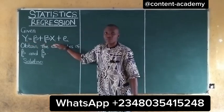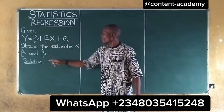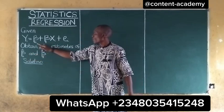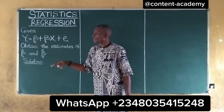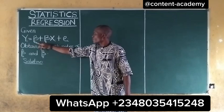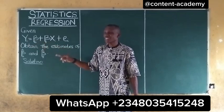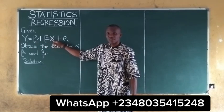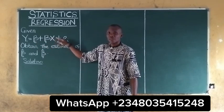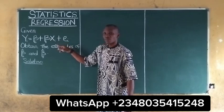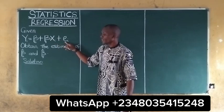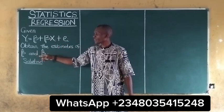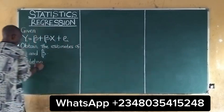This is the model given, and we are asked to obtain B0 and B1. Y here is the dependent variable. B0 and B1 are the intercept and slope. X is the independent variable, and E is the error term. So, how do we obtain B0 and B1?